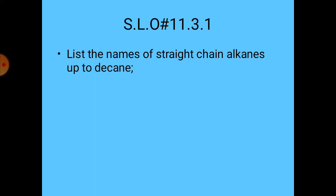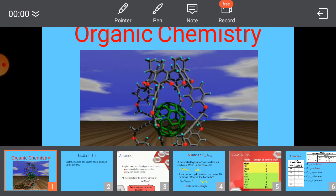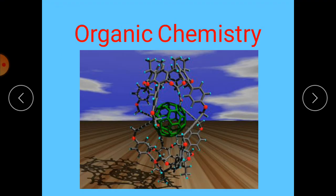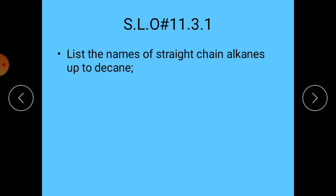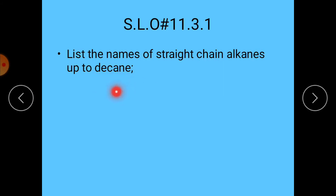What you have to do is list the alkanes in the form of straight chain, from 1 to 10. Decane means 10. Okay, if we have 10 number of carbons.